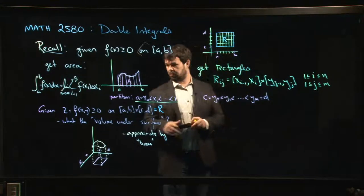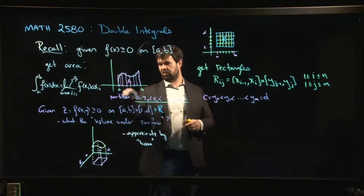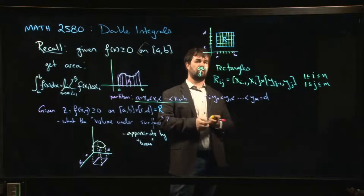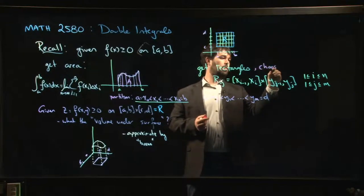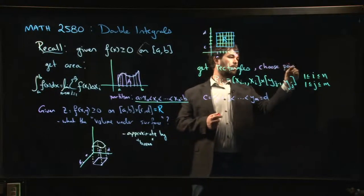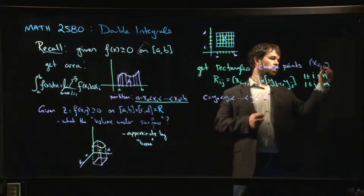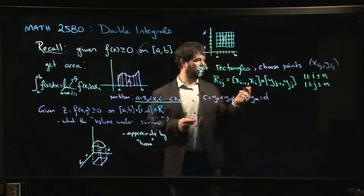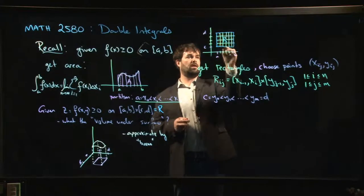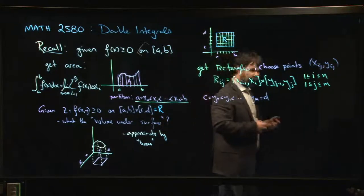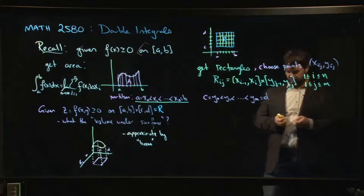And then you can kind of do the same process of, well, these rectangles are going to be the base of our boxes, the same way these intervals were the base of those rectangles there. So the next step is that you choose some points. And so we're going to choose points. Maybe we'll call them xij, yij, one in each rectangle. So we choose points, something like this. I'm not going to draw all of them. And we use those points to get the height of our box. So we're going to plug those into our function.